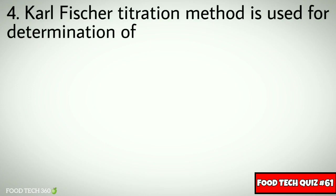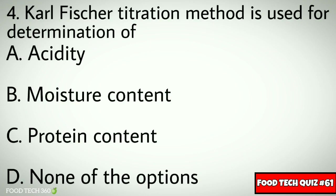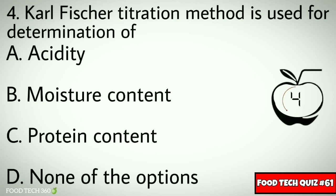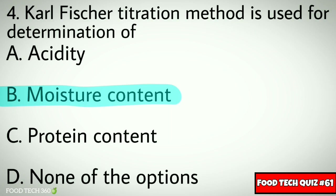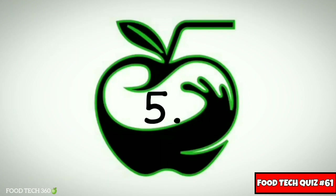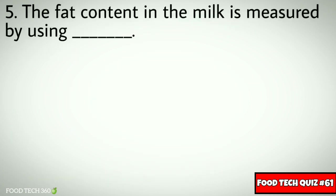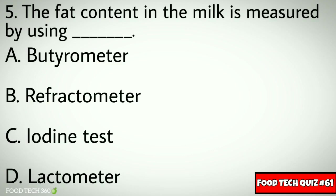Question number four: Carl Fischer titration method is used for determination of — options: a) acidity, b) moisture content, c) protein content, d) none of the options. Correct answer: b) moisture content. Question number five: the fat content in milk is measured by using — options: a) deuterometer, b) refractometer, c) iodine test, d) lactometer.